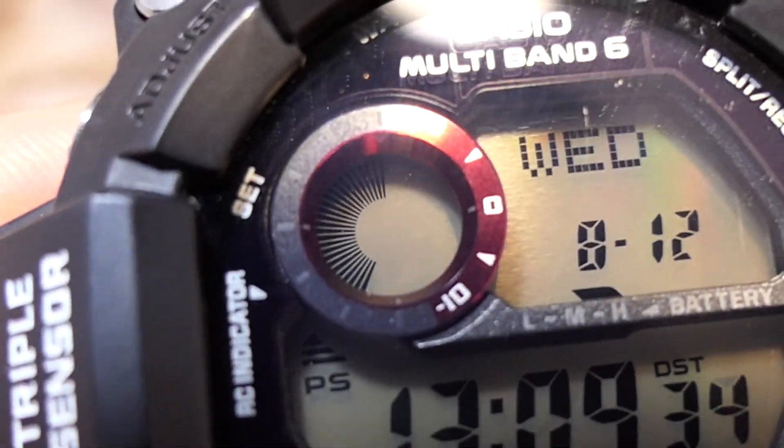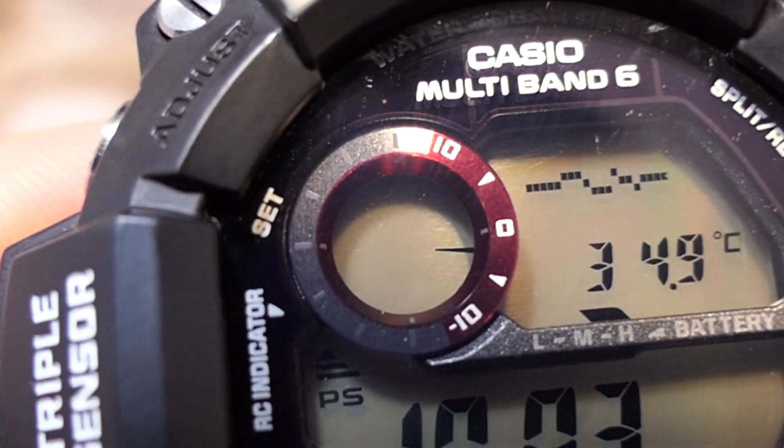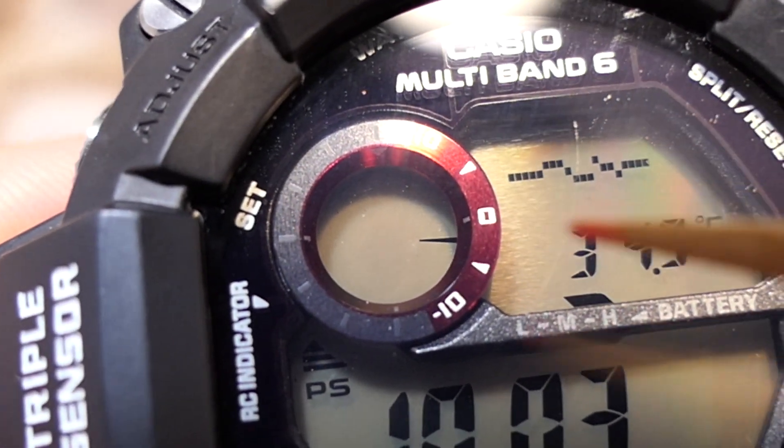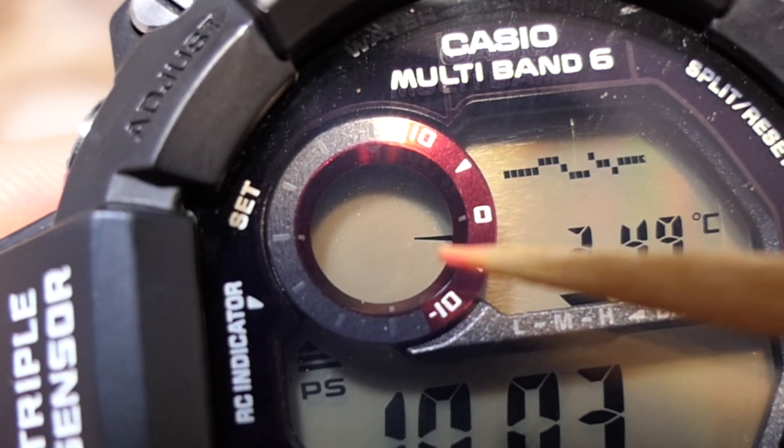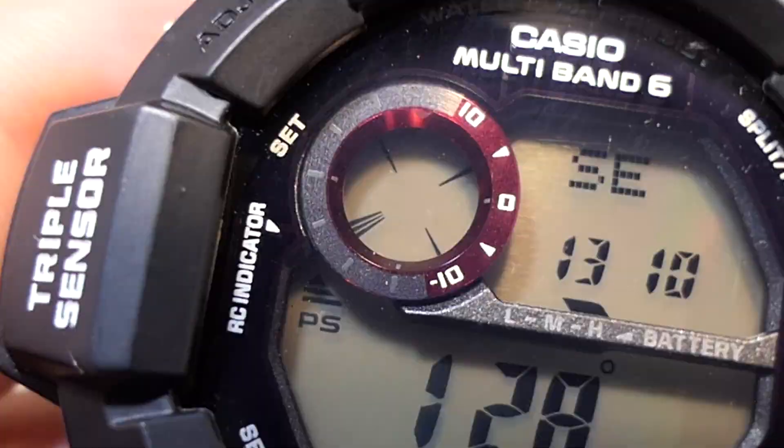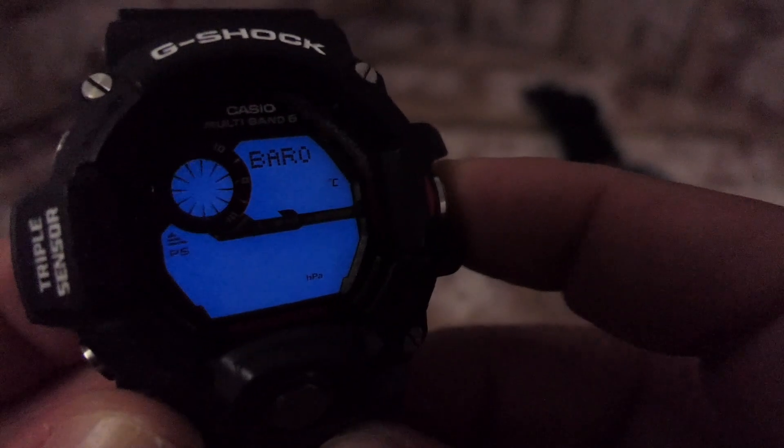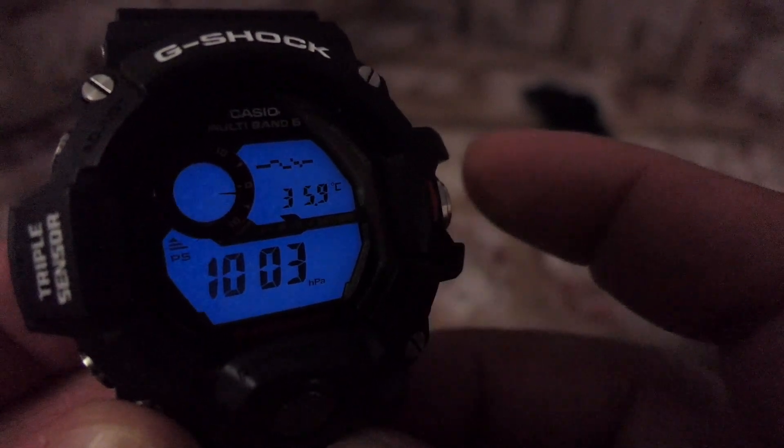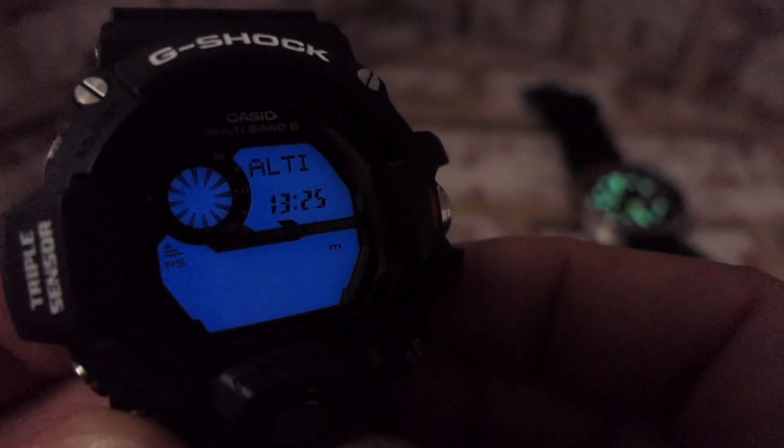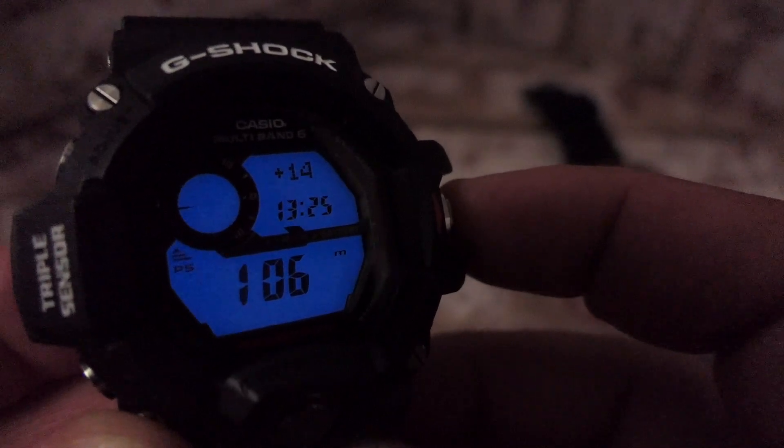If you remember in part one, I removed all the lines on the display on this Rangeman. For an example, in the sub dial, you can actually see what's going on. Then I added loom to the back of the LCD panel just to make it a little bit more interesting.